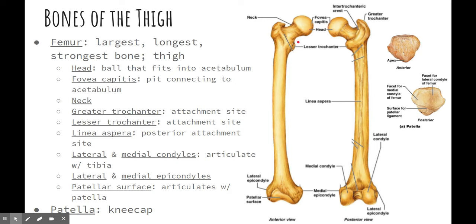Then here you have the neck of the femur — it's pretty clear cut where that is. You have a couple of other parts here. This right here is the greater trochanter, and this is the lesser trochanter. Both of those serve as attachment sites for muscles and ligaments. And if you look posteriorly, you'll see the linea aspera, which is just another attachment site for muscles.